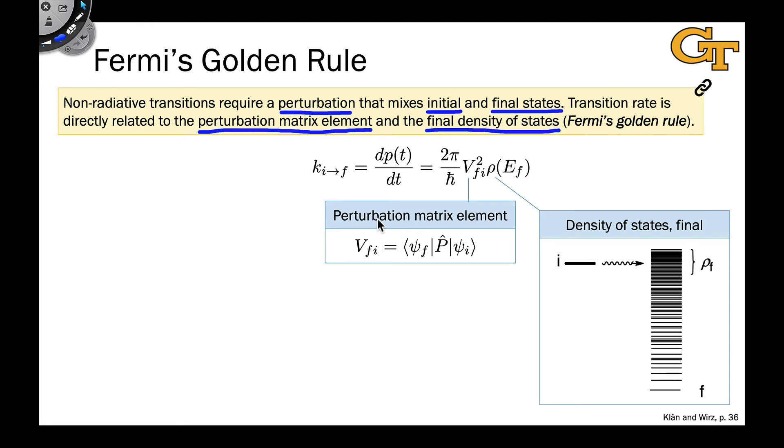And rho needs to be included because there may be more than one final state at or in the vicinity of the final energy, EF. And if there is, we have to account for the fact that the more states we have at EF, the faster the rate will be, since there are multiple potential states that the system could occupy. This figure does a nice job of illustrating how the final density of states depends on the energy gap between the I and F states.